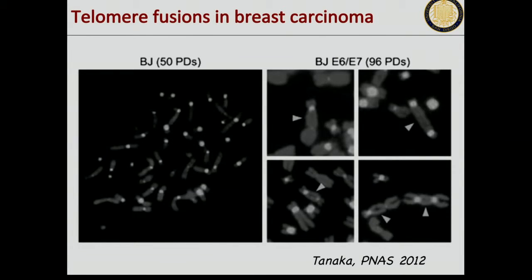Just to show you original data, this is from a breast carcinoma sample. You can see a probe showing where the centromeres are, and you see all these chromosomes with two probes lighting up, showing dicentric chromosomes. It's breakage fusion bridge in action.